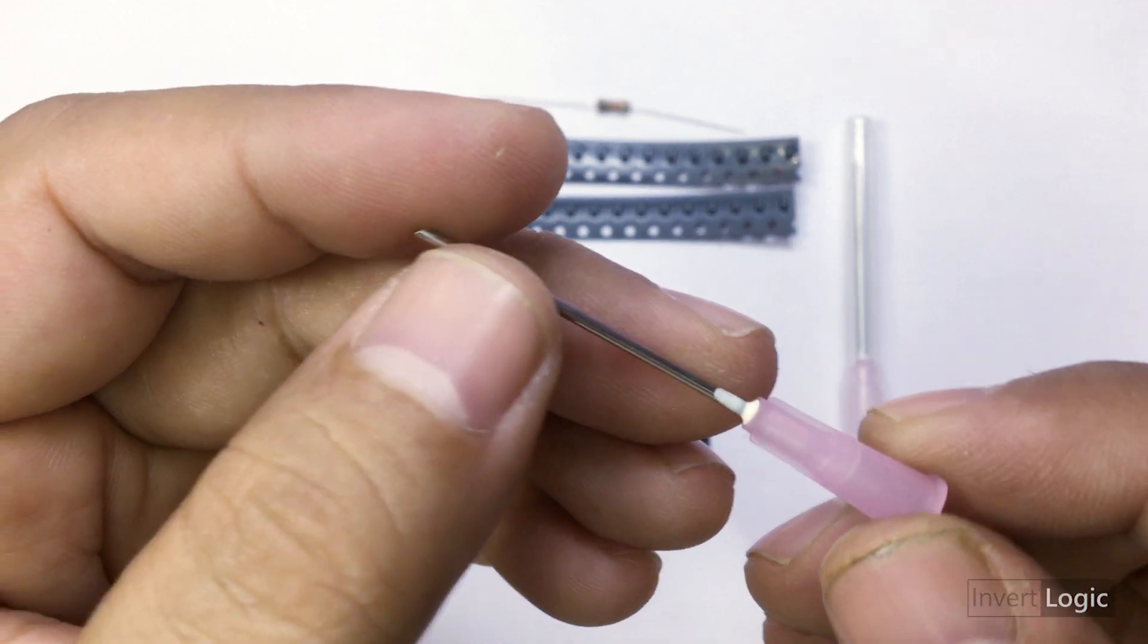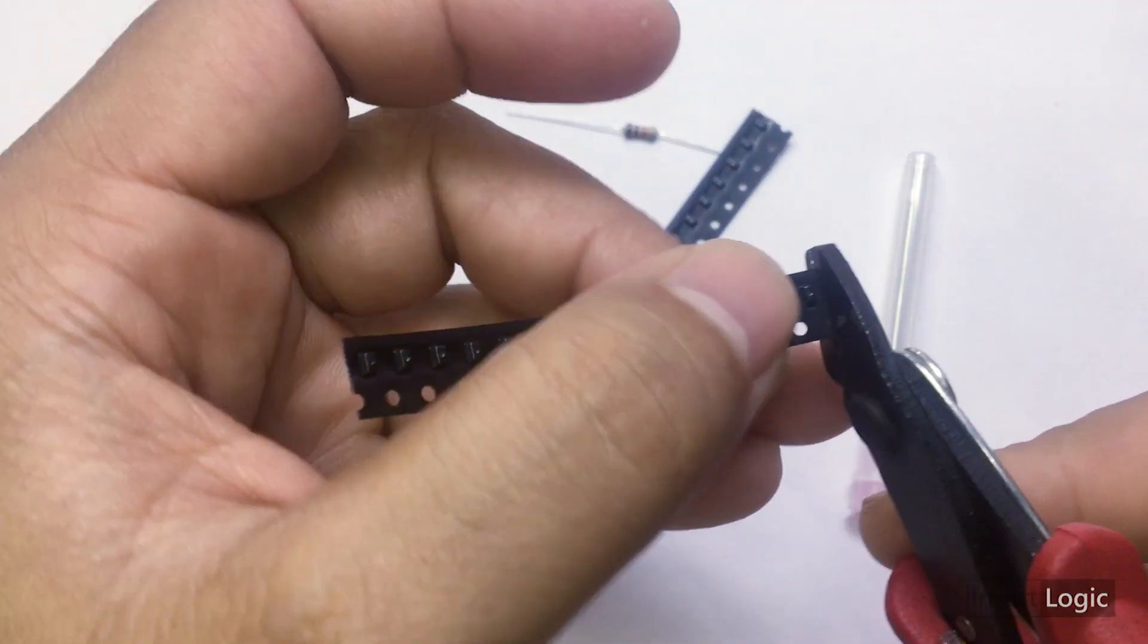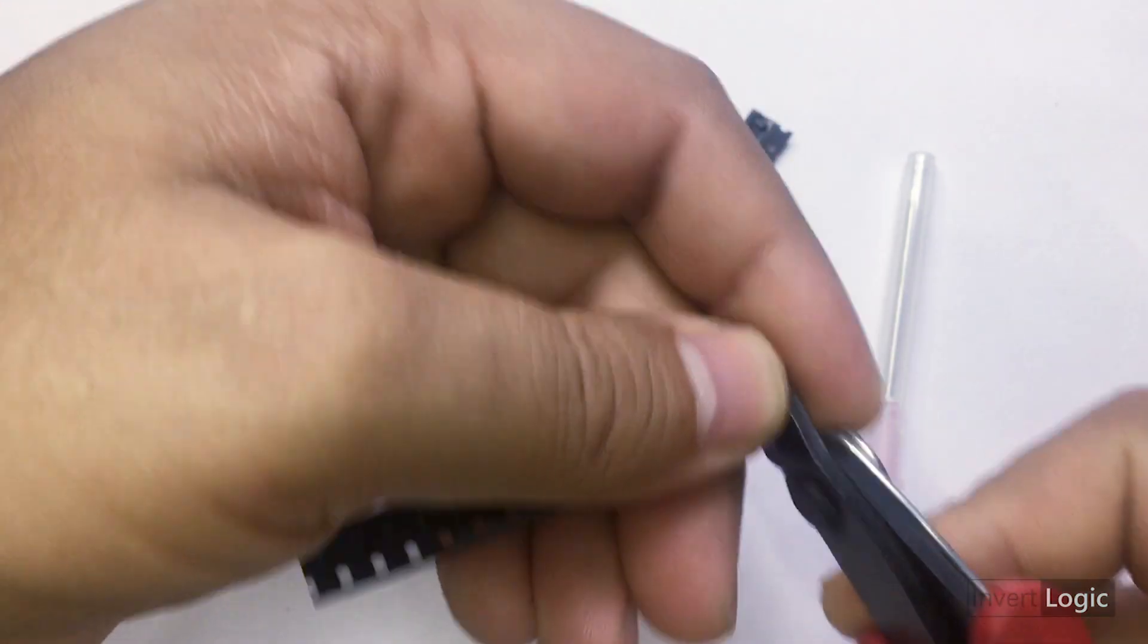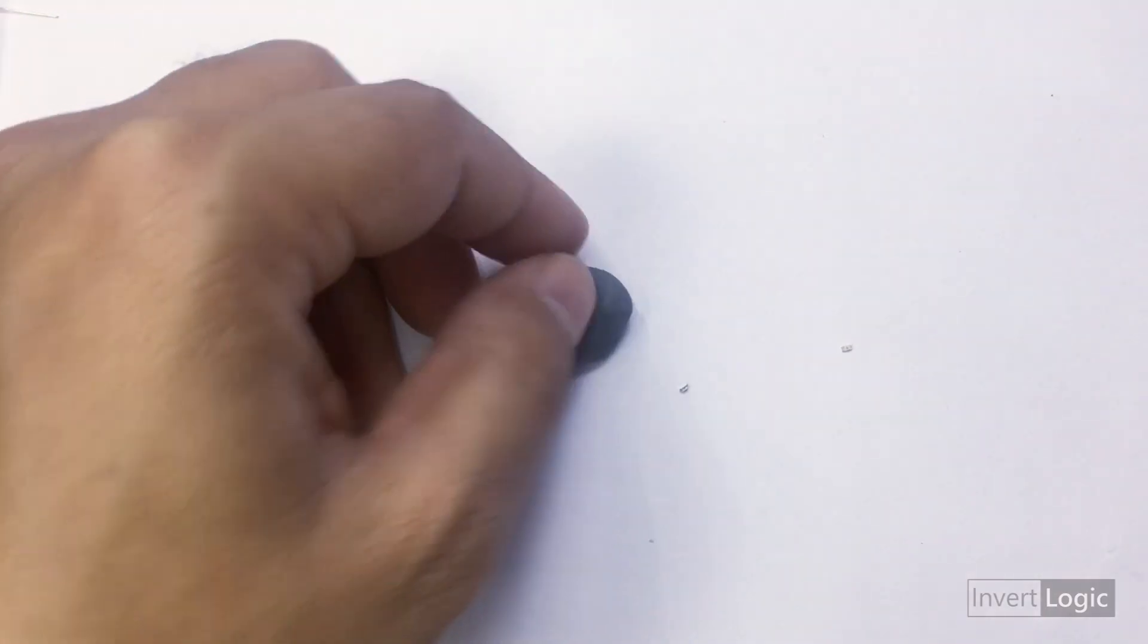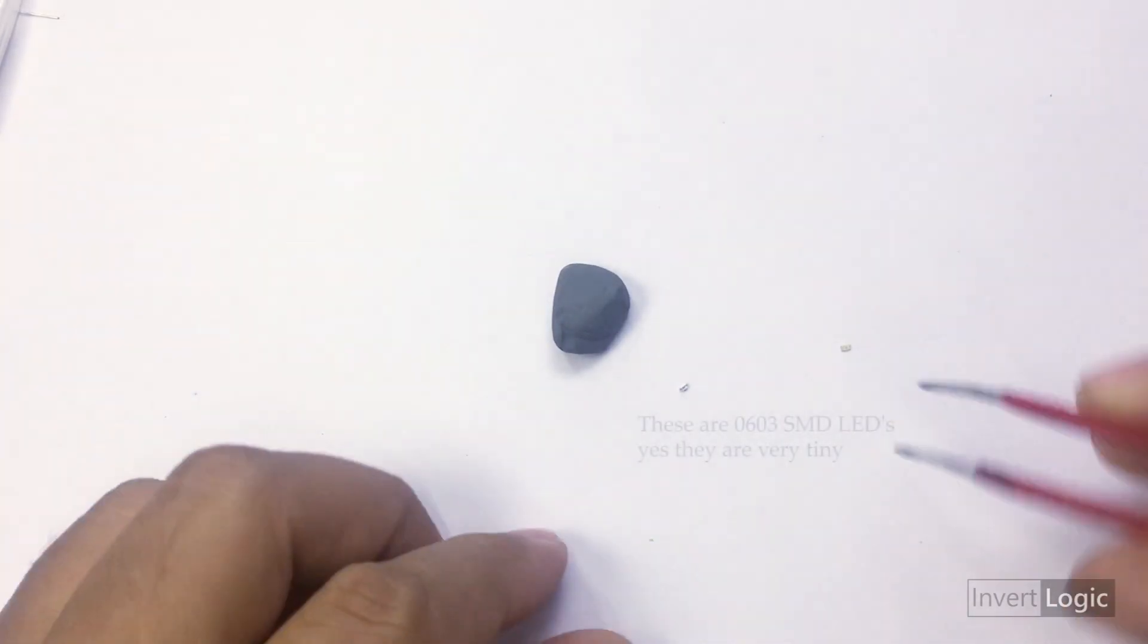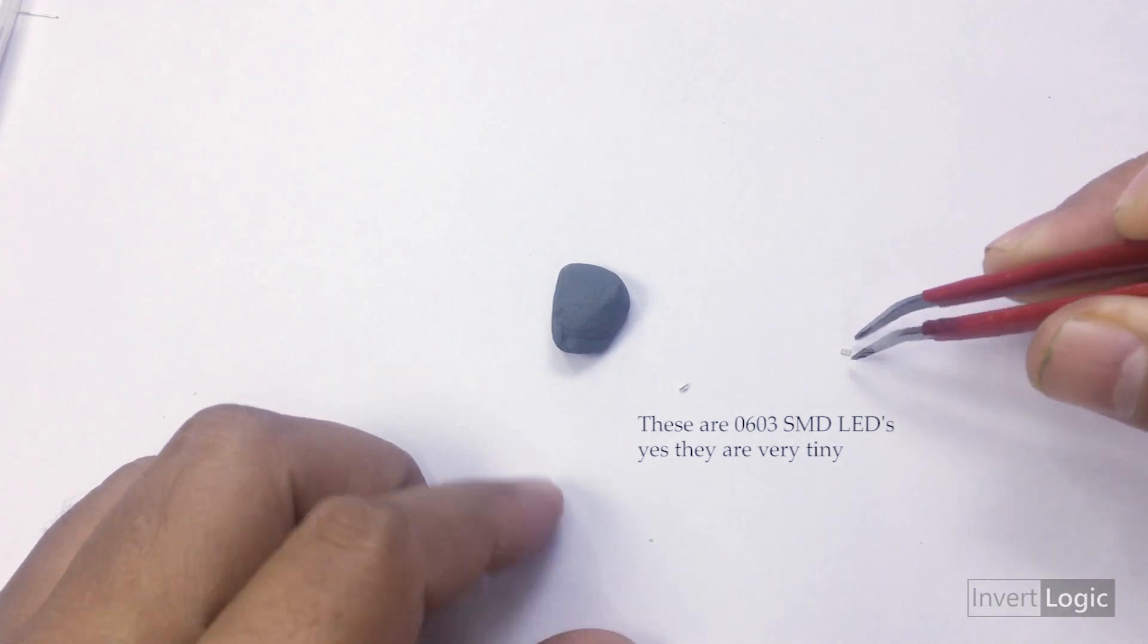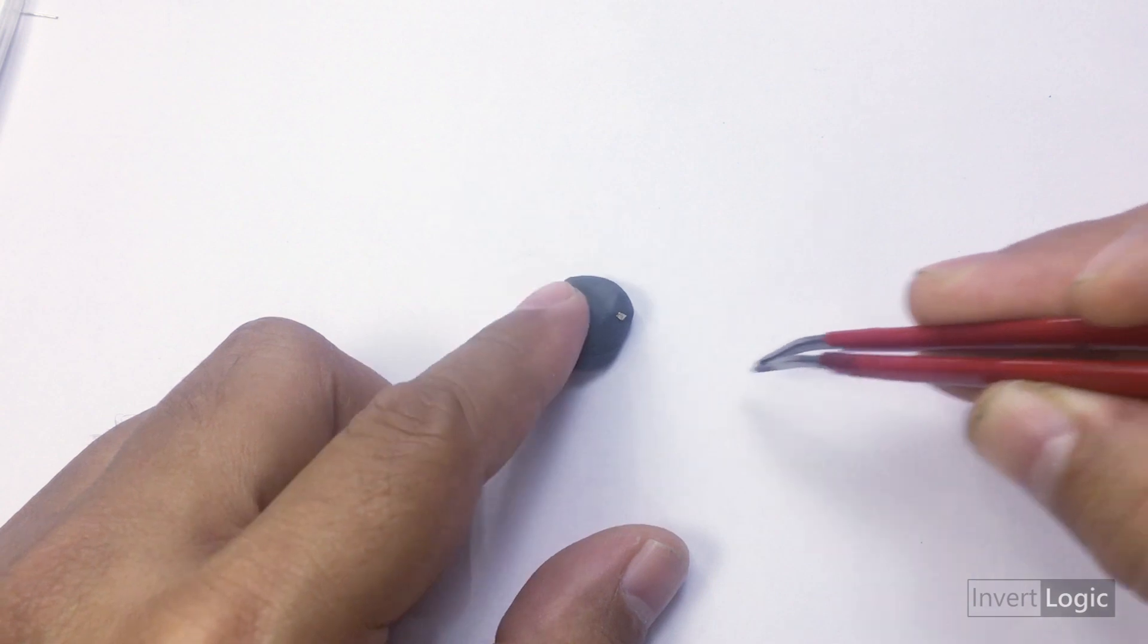Take both red and green LEDs and we will use clay as a helping hand to fix them so we can easily solder them with the wire.